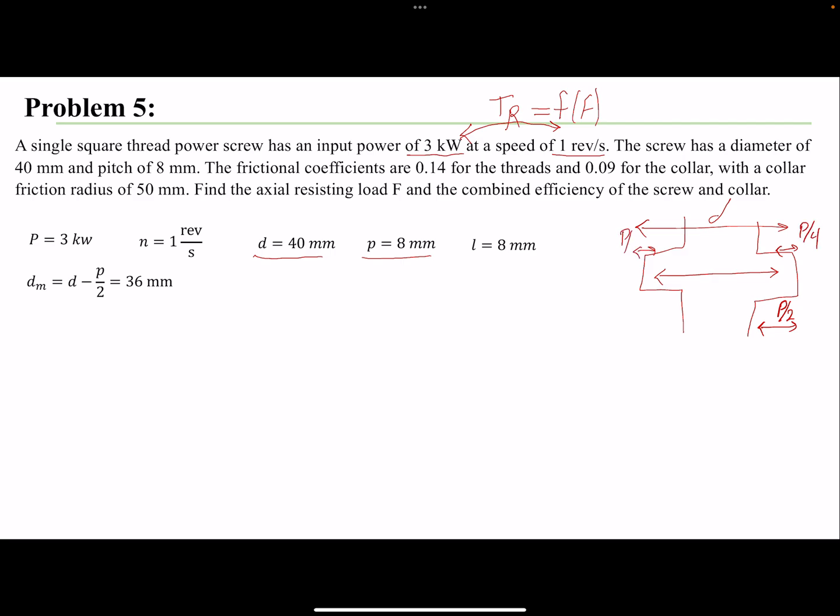The coefficient of frictions are given both for the collar and the thread. The diameter of the collar, or the friction diameter of the collar, is given.